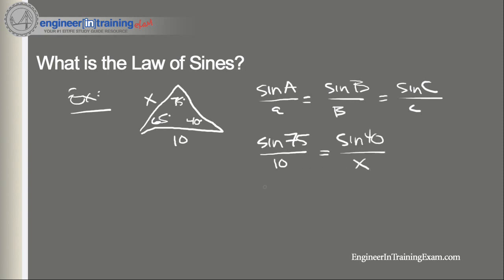Now just rearranging and solving that, we get 10 sine of 40 over the sine of 75 is equal to X.